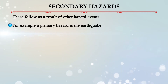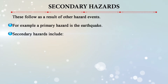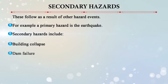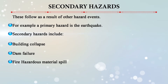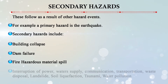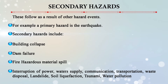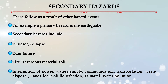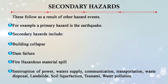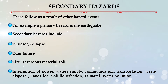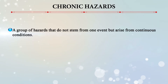Secondary hazards follow as a result of other hazard events. For example, if the primary hazard is an earthquake, secondary hazards include building collapse, dam failure, fire, hazardous material spills, interruption of power and water supply, communication failures, transportation disruption, waste disposal problems, landslides, soil liquefaction, tsunami, and water pollution.